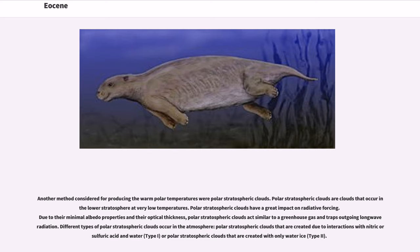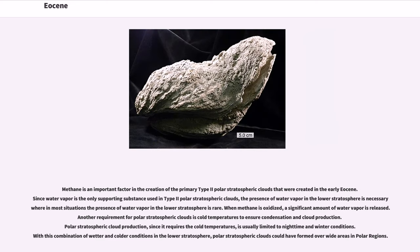Another method considered for producing the warm polar temperatures were polar stratospheric clouds. Polar stratospheric clouds are clouds that occur in the lower stratosphere at very low temperatures and have a great impact on radiative forcing. Due to their minimal albedo properties and their optical thickness, polar stratospheric clouds act similar to a greenhouse gas and trap outgoing long-wave radiation. Different types of polar stratospheric clouds occur in the atmosphere: those created due to interactions with nitric or sulfuric acid in water (Type I), or those created with only water ice (Type II). Methane is an important factor in the creation of the primary Type II polar stratospheric clouds that were created in the early Eocene. Since water vapor is the only supporting substance used in Type II polar stratospheric clouds, the presence of water vapor in the lower stratosphere is necessary, where in most situations the presence of water vapor in the lower stratosphere is rare.